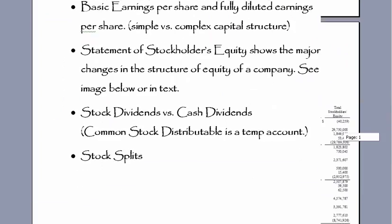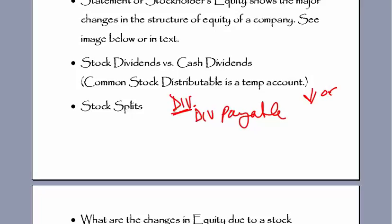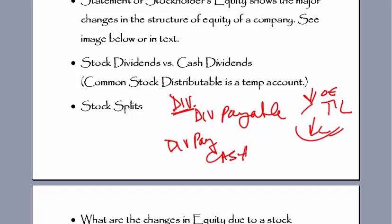The next topic is stock dividends versus cash dividends. When we do a cash dividend, we debit dividends and credit dividends payable. At that point we've reduced owner's equity by declaring dividends — dividends is the contra owner's equity account and dividends payable is our liability. Then later, when we actually pay those dividends, we take dividends payable off the books and record cash going down.